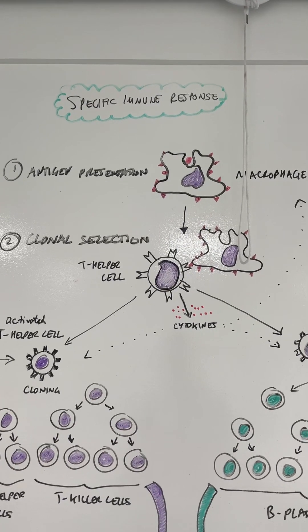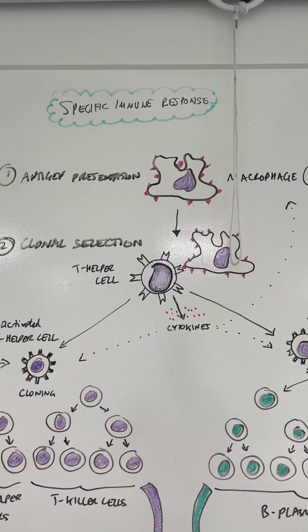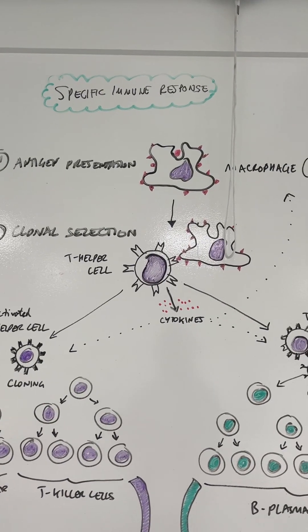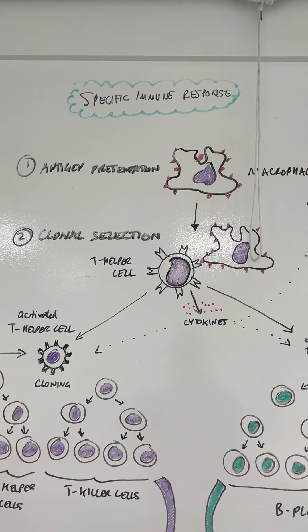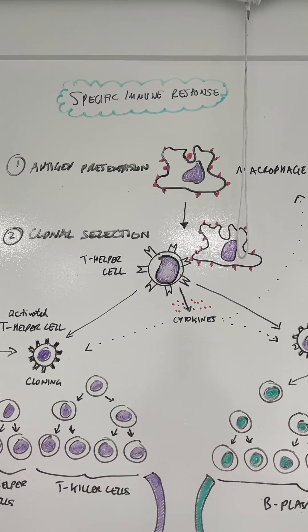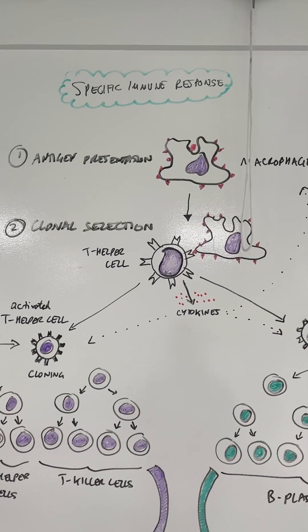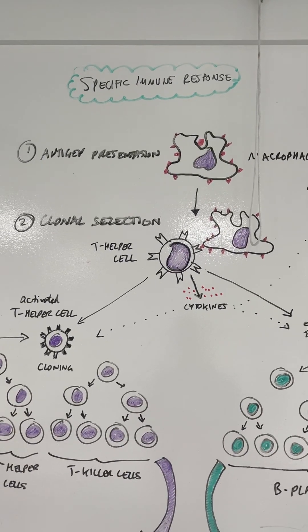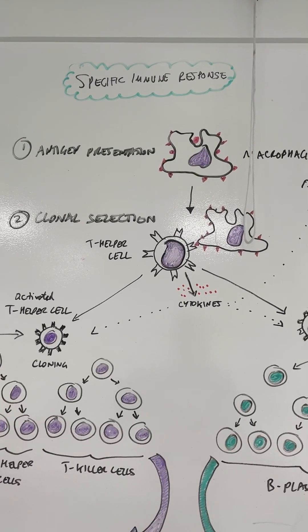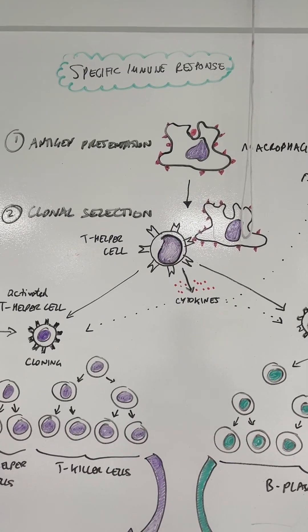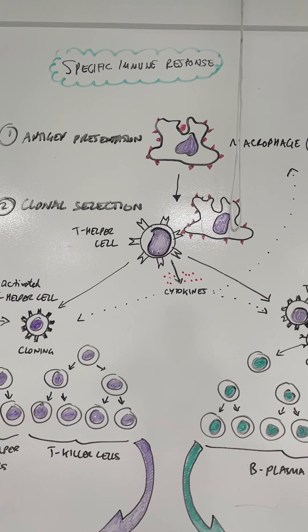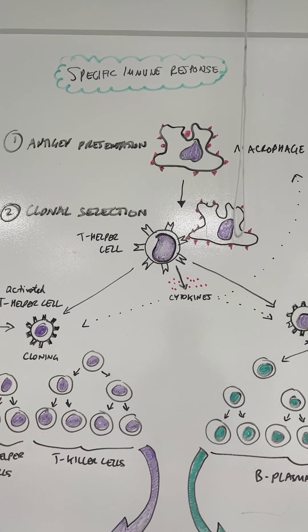Clonal selection is when the body needs to find the correct T helper cell which the receptor will bind to that particular antigen, because lymphocytes are specific to specific antigens. You've got to find the right one. Now this can take a few days, so the specific immune response is a much slower response. But once you do find the right T helper cell, it will release little chemicals called cytokines which go off and stimulate different processes to occur in the specific immune response.